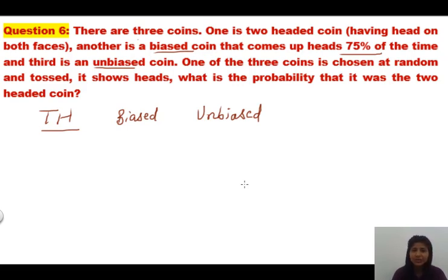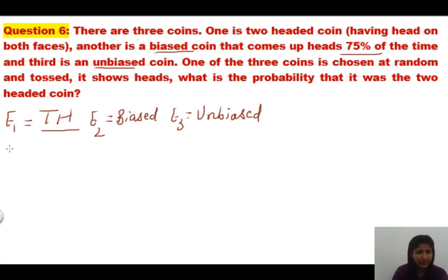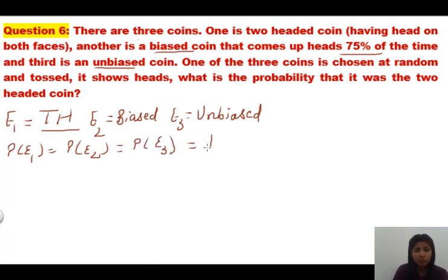In the 2-headed coin, both sides have heads only, so whenever you throw it, every time you are going to get a head. Now they are saying one of the coins is chosen at random. I consider E1 as the event that the two-headed coin is selected, E2 as the event that the biased coin is selected, E3 as the event that the unbiased coin is selected. Since they are equally probable, the probability of each is 1 out of 3.